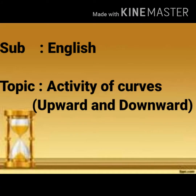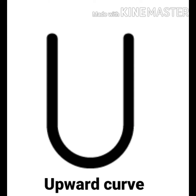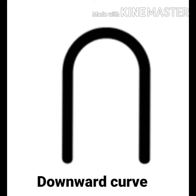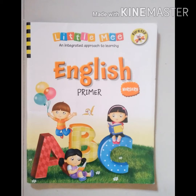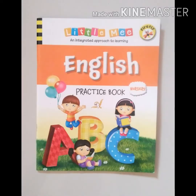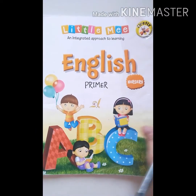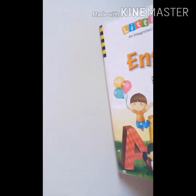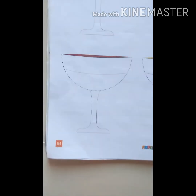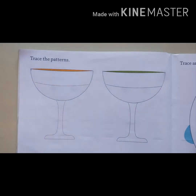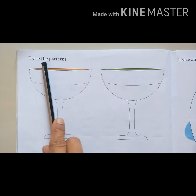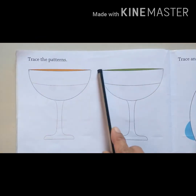Hello students, today our subject is English and the topic is activity of upward curve and downward curve. This is upward curve and this is downward curve. Now we will do an activity in the English primer book. Open our English primer book on page number 54. Here is an activity: trace the patterns. So let's start tracing the patterns.